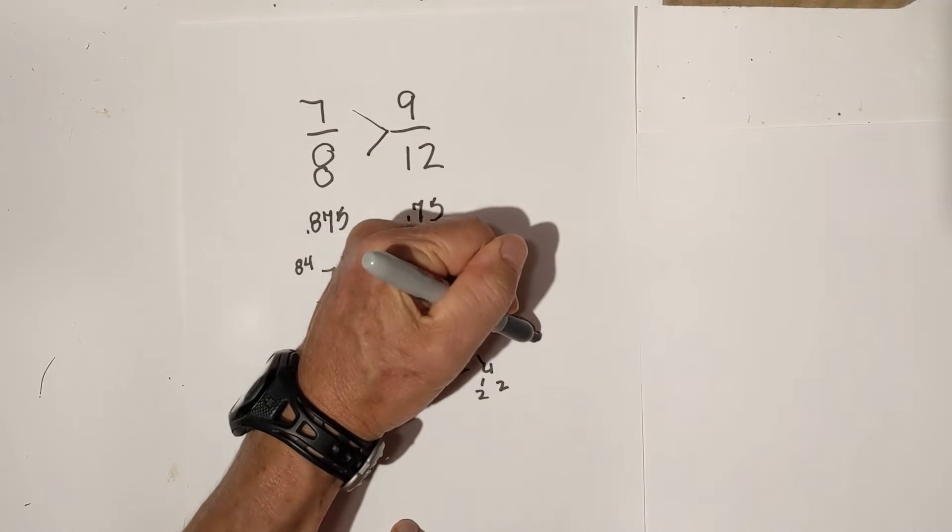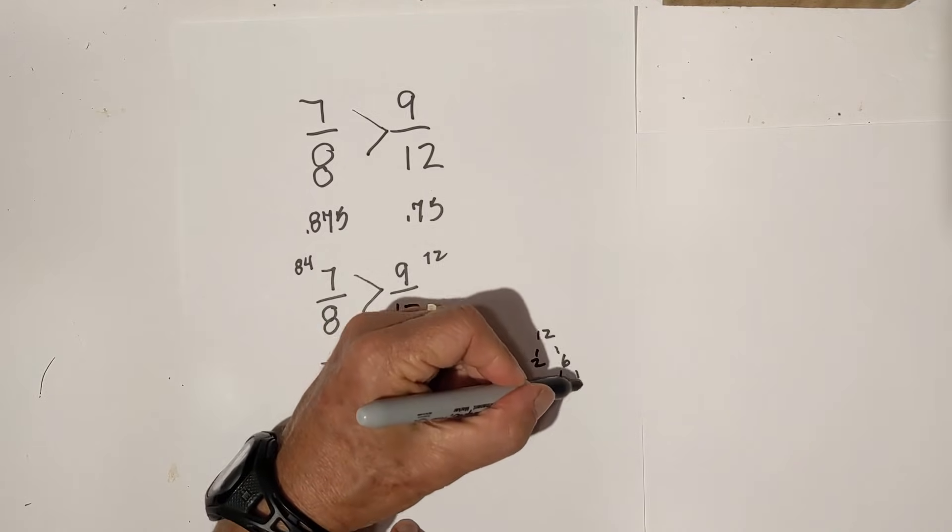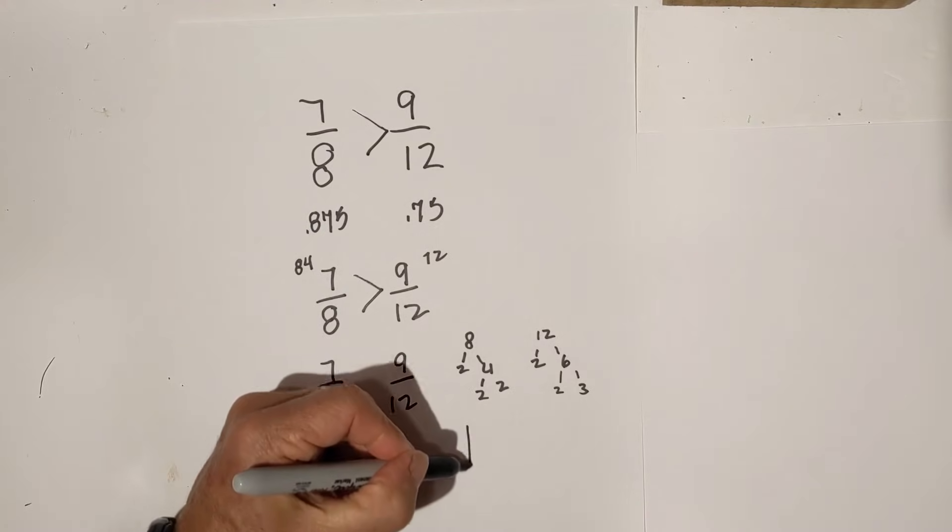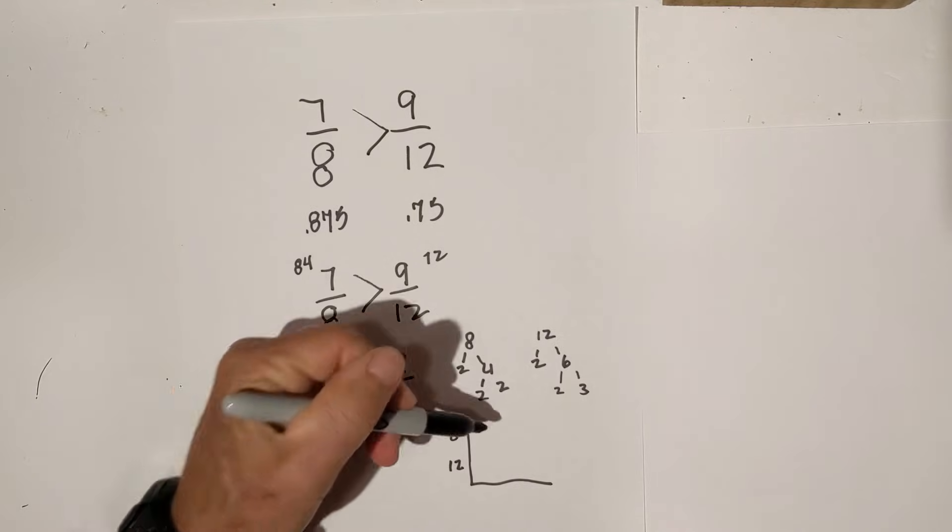For 12, let's try 2 times 6 is 12. 2 times 3. I'm down to prime numbers. Now, I place them in a chart just to organize. Guys, this works for finding a common denominator for any number.